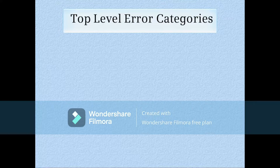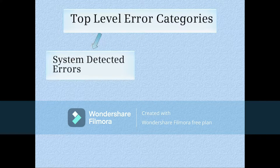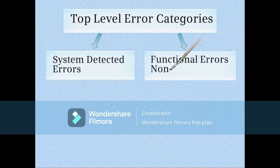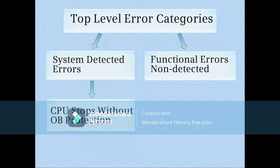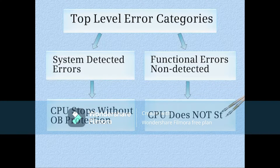At the top level there are basically two categories for errors: those that the system can detect, sometimes called stop errors, and those that the system cannot detect, called functional errors. System-detected errors will usually cause the CPU to go to stop mode. With functional errors, something doesn't work right but the system cannot detect what it is and the CPU does not stop.